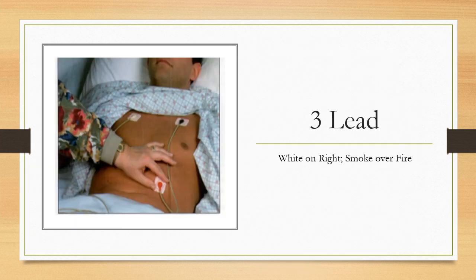For three-lead electrode placement, the mnemonic is 'white on right and smoke over fire.' The white electrode goes on the right shoulder just beneath the clavicle. The black electrode (smoke) goes on the left shoulder beneath the clavicle. The red electrode (fire) sits just beneath the rib cage on the left side of the body.